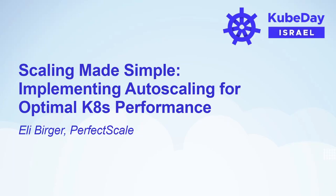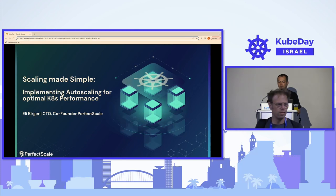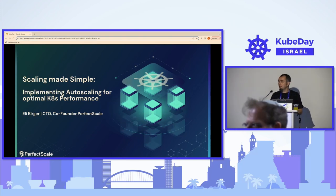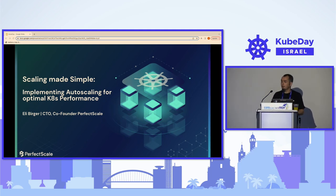Hello everyone. Hi, my name is Eli Birger. I'm a CTO and co-founder of Perfect Scale. Prior to establishing Perfect Scale, I spent many years managing DevOps and infrastructure teams.